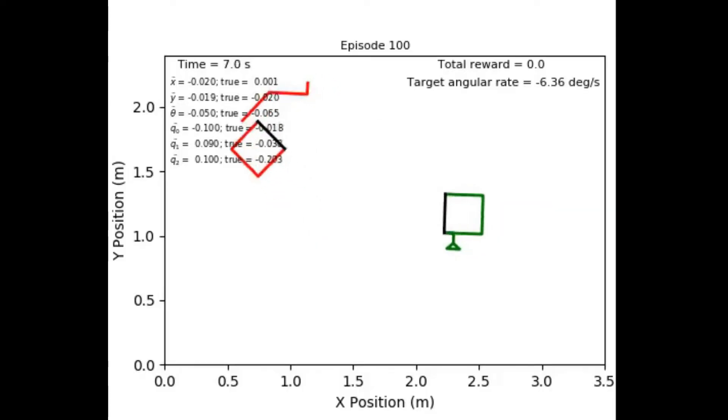We communicate the desired behavior to the neural network through a reward signal. The neural network, then, through trial and error, repeatedly simulates a chaser trying to capture a target, tweaking its behavior each time in order to try and receive more rewards. If we select a reward function carefully, we can then encourage the desired behavior.